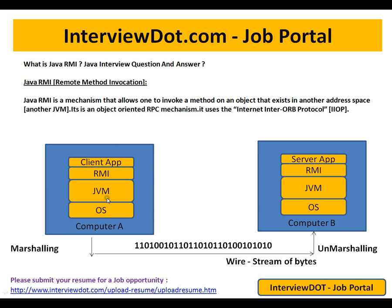For example, you have a client application running in a JVM on Computer A in a particular OS. Using RMI, you can invoke a method in a different JVM on a different computer — that is the server application. You can make a call from the client to the server using Remote Method Invocation.